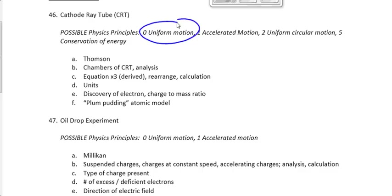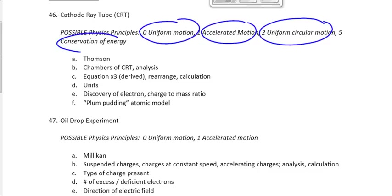Let me mention the physics principles listed here. Uniform motion — because charged particles go at constant speed through the velocity selection chamber. Accelerated motion — because they're accelerating from cathode to anode. Uniform circular motion — because they go in a circle in the main chamber where we find the charge-to-mass ratio. And conservation of energy — because we use EI equals EF to find the speed as it reaches the anode. In a given situation you'll use one or the other — not both — to find the speed.